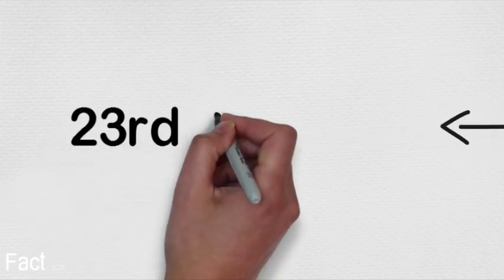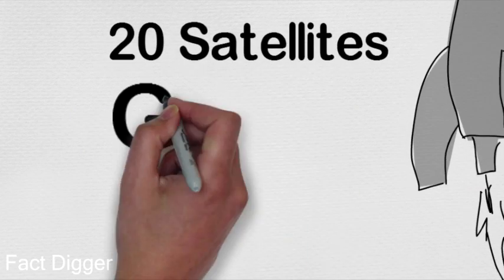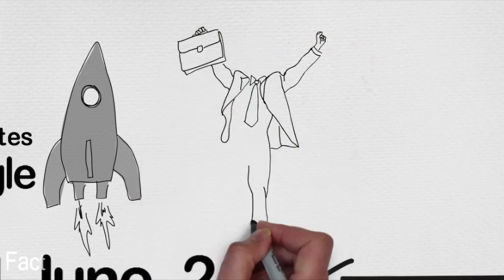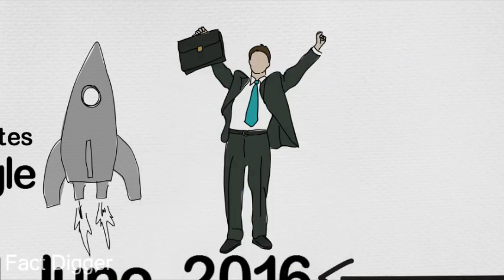On 23rd June 2016, ISRO placed 20 satellites in orbit with a single flight, one being a satellite from Google. This was the record for the most number of satellites to put into orbit by an ISRO mission.